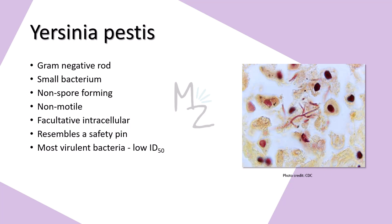Yersinia pestis is a gram-negative rod. It is a small bacterium. It is not responsible for forming spores like some bacteria do, and it is also non-motile because it has no motility apparatus like a flagellum. It is a facultative intracellular bacterium, which means it can live both inside and outside the cell. And it resembles a safety pin — I'll explain that in the morphology section. Yersinia pestis is one of the most virulent bacteria known, with a strikingly low infectious dose of 1 to 10 organisms capable of causing the disease.